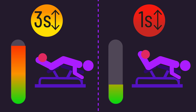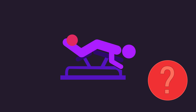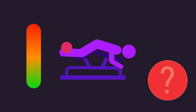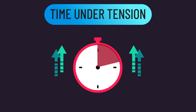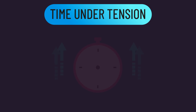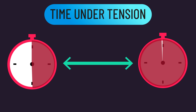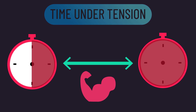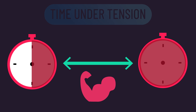All of this begs the question: what happens when we get subjects to perform reps to or close to failure? Does a longer time under tension, or a time under tension in the 30 to 60 second range, still produce more hypertrophy? The answer is no.